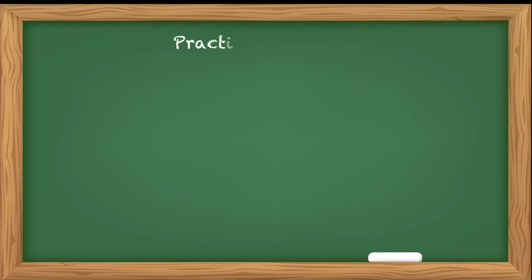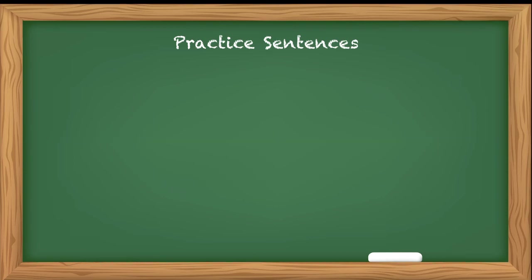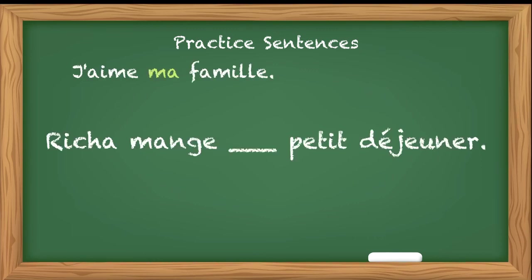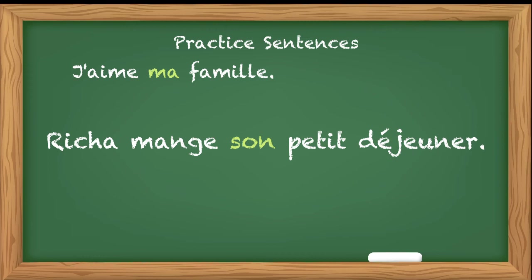I'll give you a few practice sentences — try and fill in the blanks with the appropriate possessive adjective. 'I love my family' — J'aime ma famille. 'Richa mange ___ petit déjeuner.' Petit déjeuner is masculine singular and Richa is third person singular, so we refer to table one below il/elle — the masculine possessive adjective will be son. Richa mange son petit déjeuner.